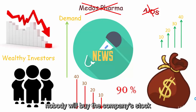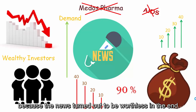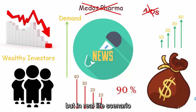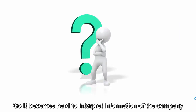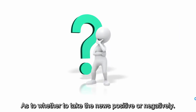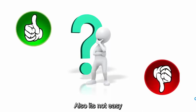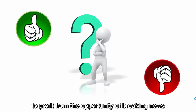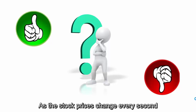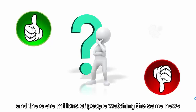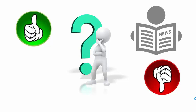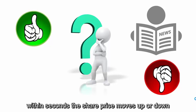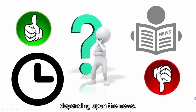Nobody would buy the company's stock once the news turned out to be worthless. But in real life, people don't deal with this kind of clear-cut news every day — they usually deal with a lot of complex information, making it hard to interpret whether news is positive or negative. Also, it's not easy to profit from breaking news opportunities because stock prices change every second, there are millions of people watching the same news, and some people have insider information advantages. Within seconds of news breaking, share prices can move up or down.